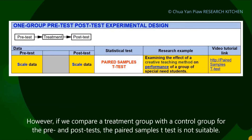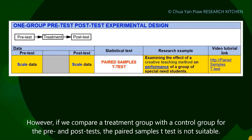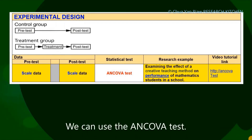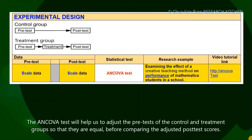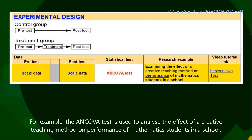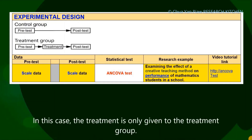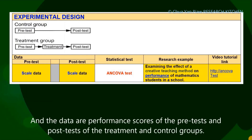However, if we compare a treatment group with a control group for the pre- and post-test, the paired sample t-test is not suitable. We can use the ANCOVA test. The ANCOVA test will help us to adjust the pre-test scores of the control and treatment groups so that they are equal before comparing the adjusted post-test scores. For example, the ANCOVA test is used to analyze the effect of a creative teaching method on the performance of mathematics students, where the treatment is only given to the treatment group, and the data are performance scores from the pre-test and post-test of both groups.